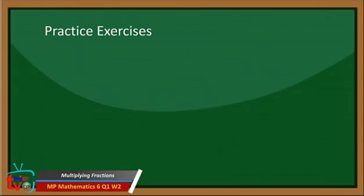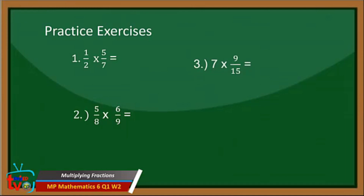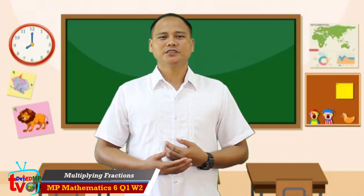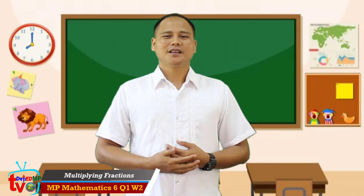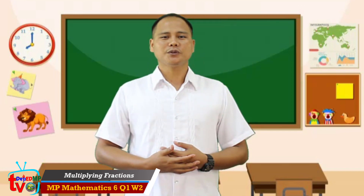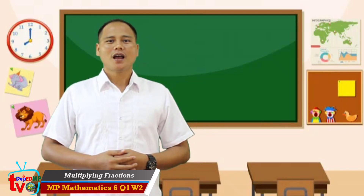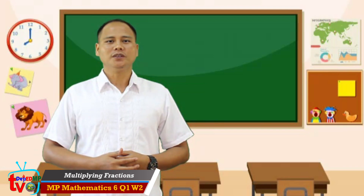Here are practice exercises for you to do. Number 1: 1 over 2 times 5 over 7. Number 2: 5 over 8 times 6 over 9. Number 3: 7 times 9 over 15. Number 4: 3 and 3 eighths times 4 over 7. Do we have the same answers? Very good! If not, you can replay this video to refresh yourself on multiplying fractions. To master multiplying fractions, answer the remaining activity on your own in your activity sheet. I know you can do this.